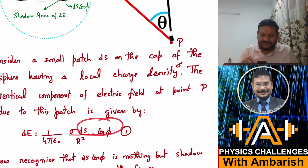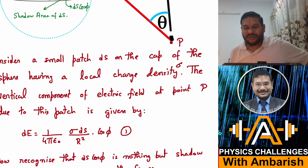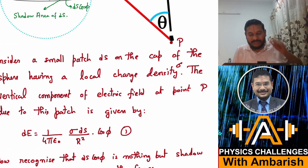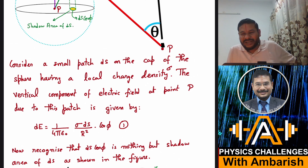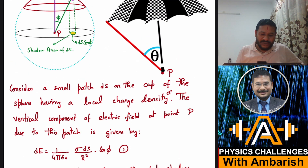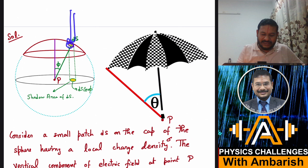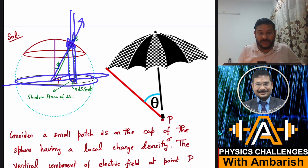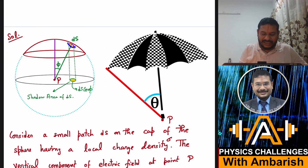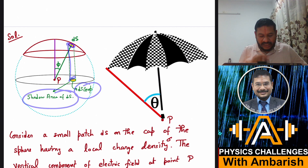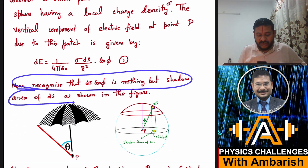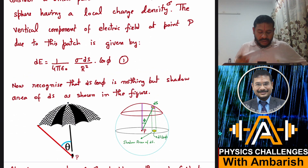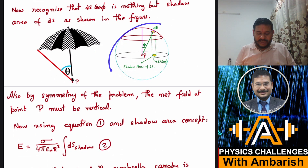Now ds·cos φ is a very special quantity. You've come across this ds·cos φ concept in many places — finding excess pressure in a bubble, electric flux, and many other situations. ds·cos φ is nothing but the shadow area of the patch. If light comes from the top and falls on area ds, and this angle is φ, then the shadow of ds on a surface perpendicular to the light rays is ds·cos φ. So I can replace ds·cos φ with the shadow area of ds.